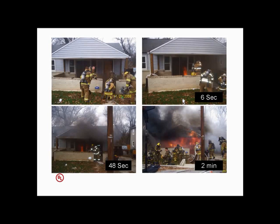The lineman from the engine crew took his 100-foot shoulder load and dumped it in the porch area. He didn't have enough time to flake it out before he got water, so now he's got 100 feet of tangled, knotted spaghetti. He's not getting water to the nozzle, and he doesn't communicate this to the truck crew inside. The only fuel load in this entire house — which happened to be vacant — was a sofa and an end table in the living room. That was it.